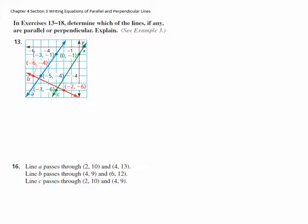How do we know when lines are parallel? Parallel lines have the same slope. You can calculate the slopes from graphs and see that when two lines are parallel, their slopes will be the same.